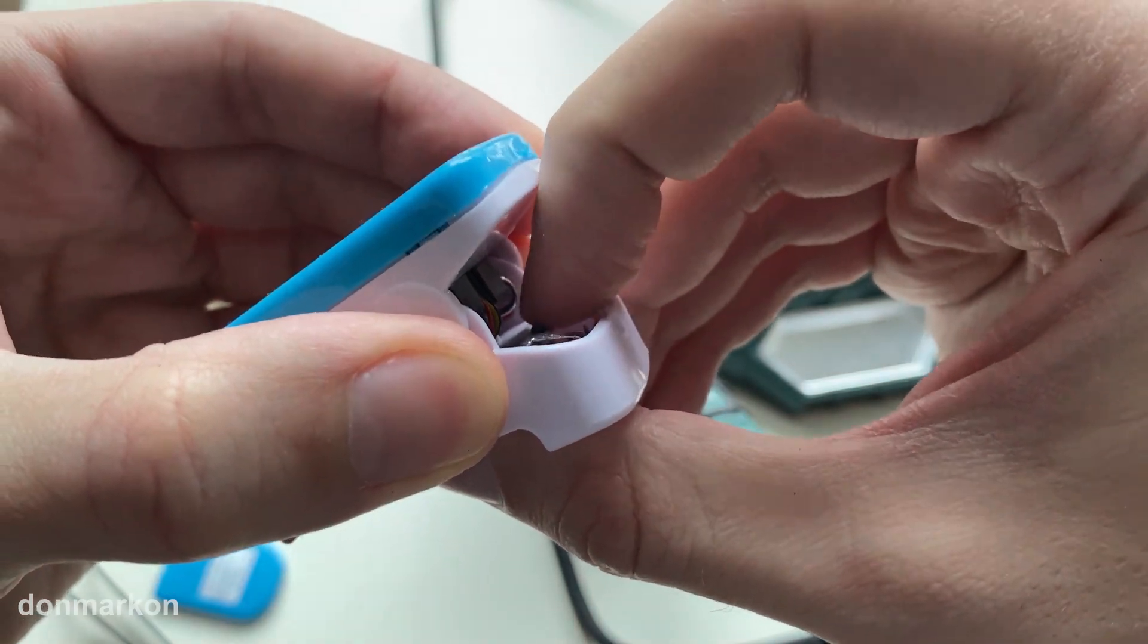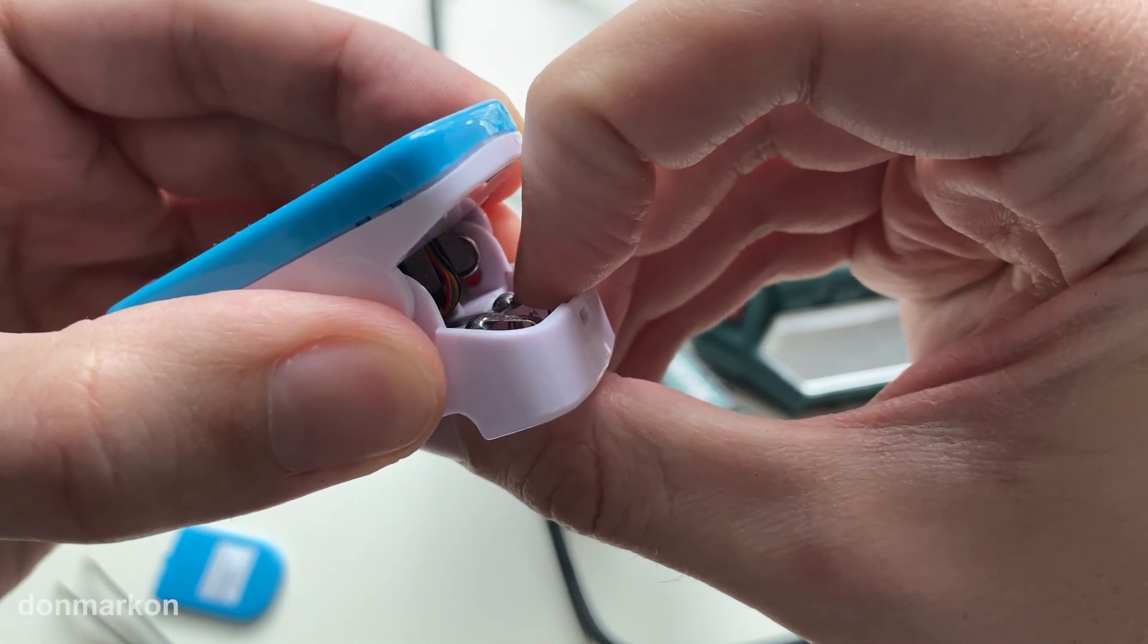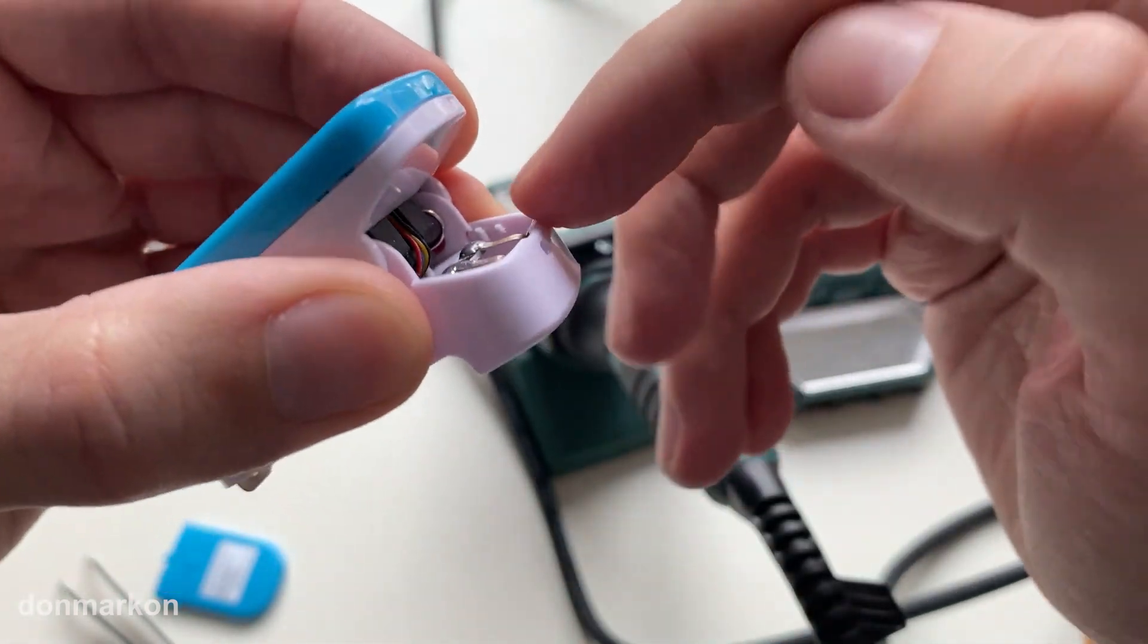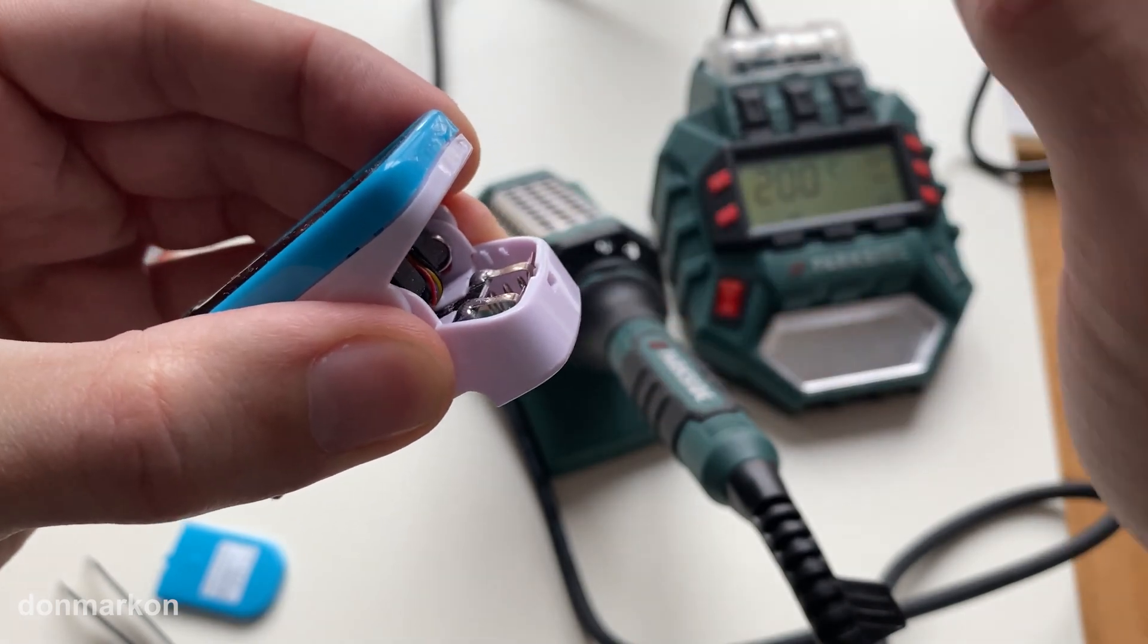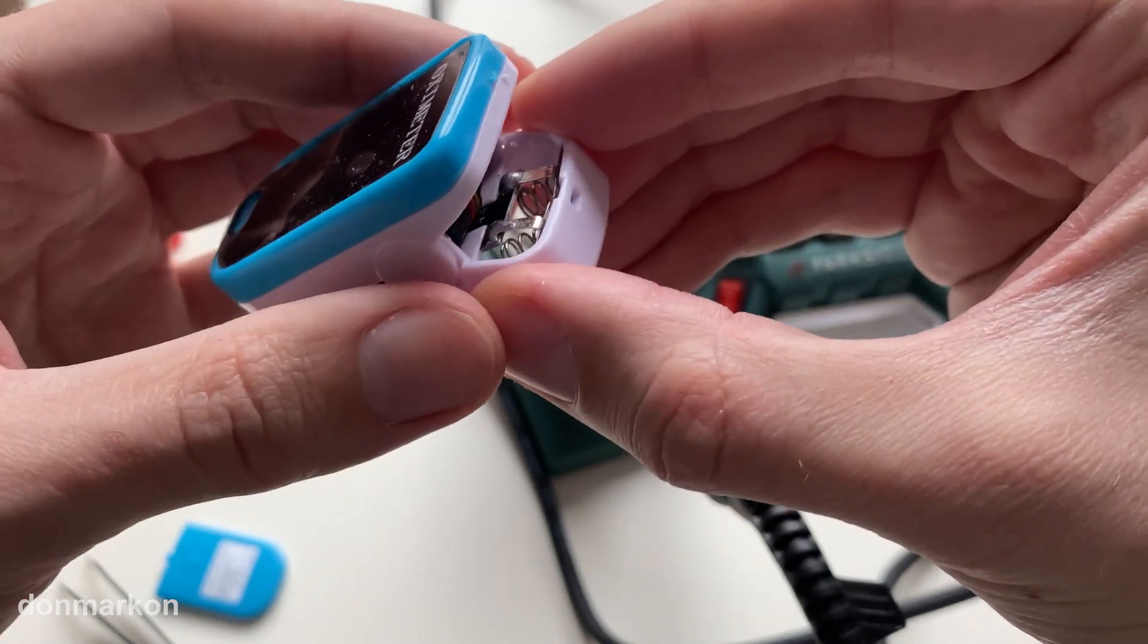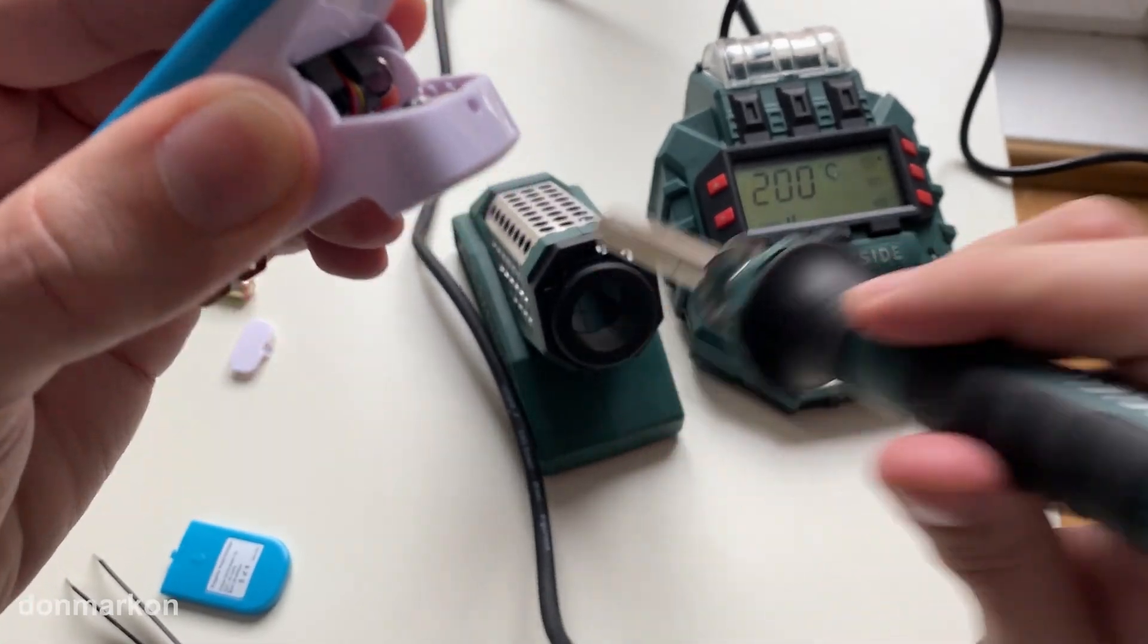You want to make sure that there is contact happening. You can just press this a little bit harder, and at this point it could work without resoldering, but it is a short-term solution. So what you need to do is take your solder.